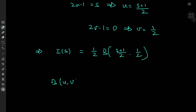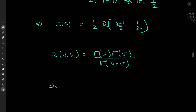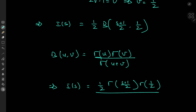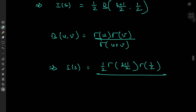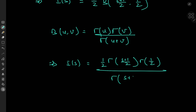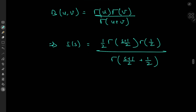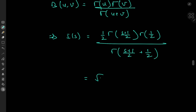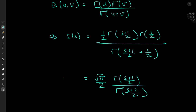Now we invoke the relationship between the beta and gamma functions. The beta function with arguments u and v equals gamma u times gamma v divided by gamma u plus v. So in our case, I of s equals 1 half of gamma of s plus 1 by 2 times gamma of 1 half, divided by gamma of s plus 1 by 2 plus 1 by 2. Now gamma of 1 half is famously equal to root pi, so we have root pi by 2 times gamma of s plus 1 divided by 2, divided by gamma of s plus 2 divided by 2. That is I of s.